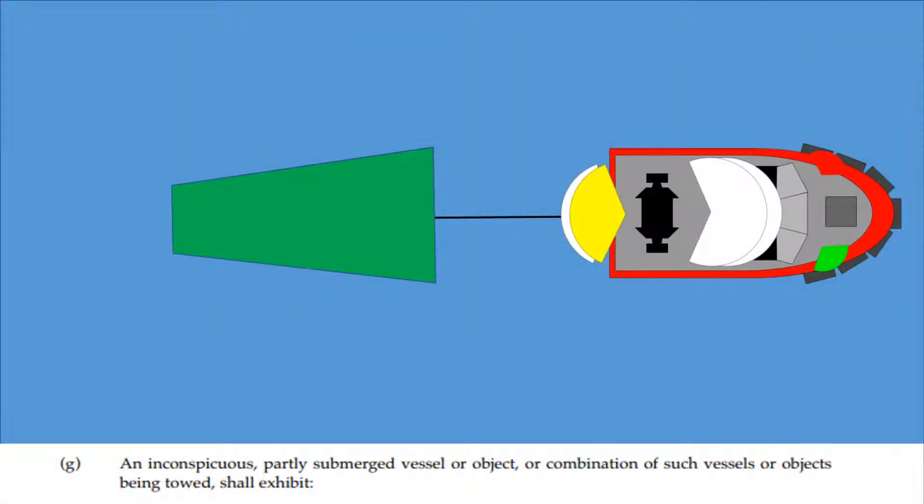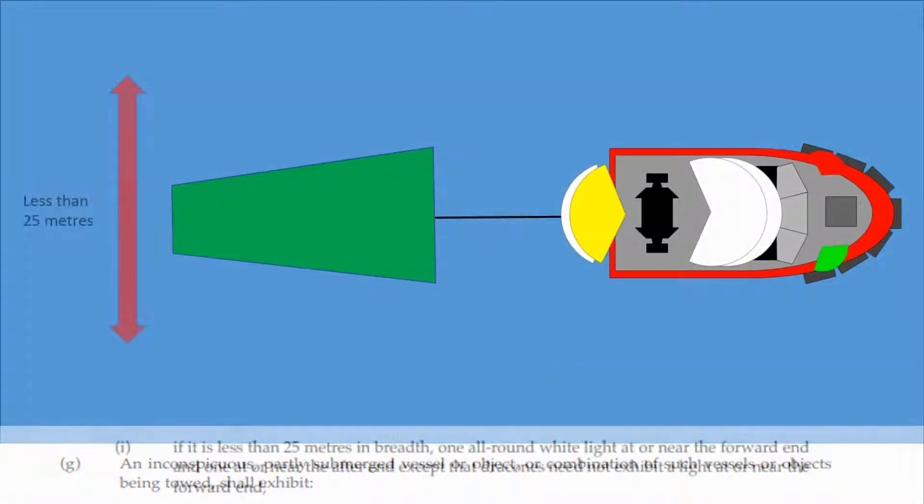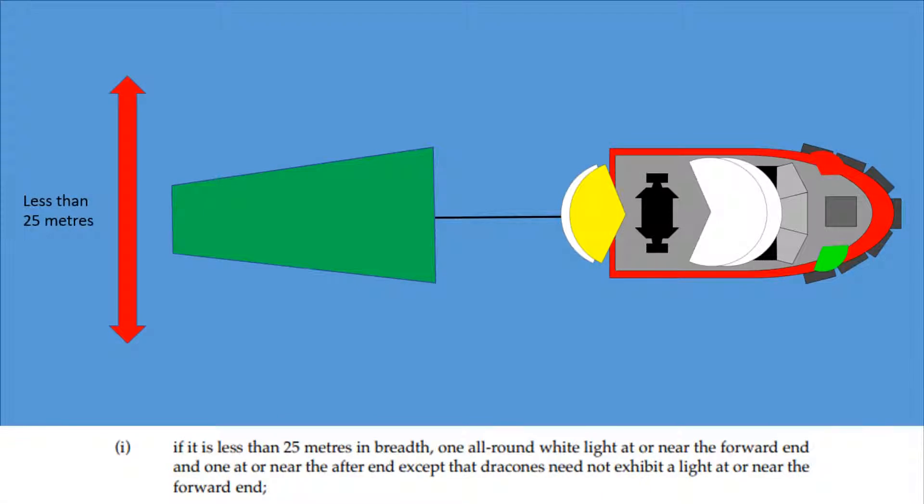An inconspicuous, partly submerged vessel or object, or combination of such vessels or objects being towed, shall exhibit, if it is less than 25 meters in breadth, one all-round white light at or near the forward end and one at or near the after end, except that dracones did not exhibit a light at or near the forward end.